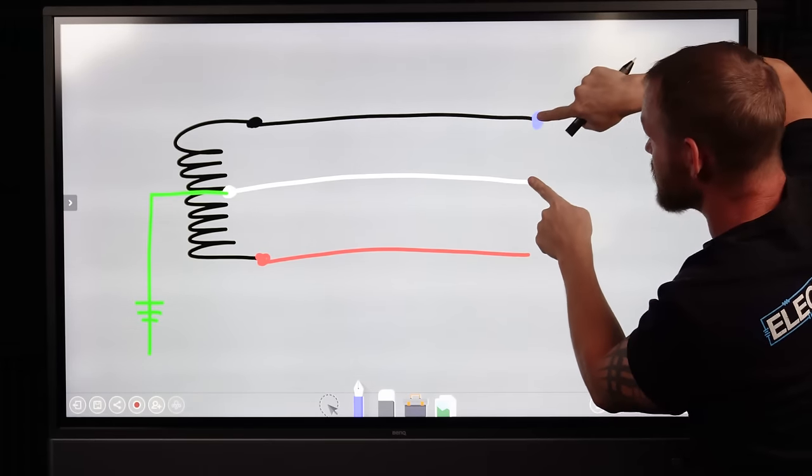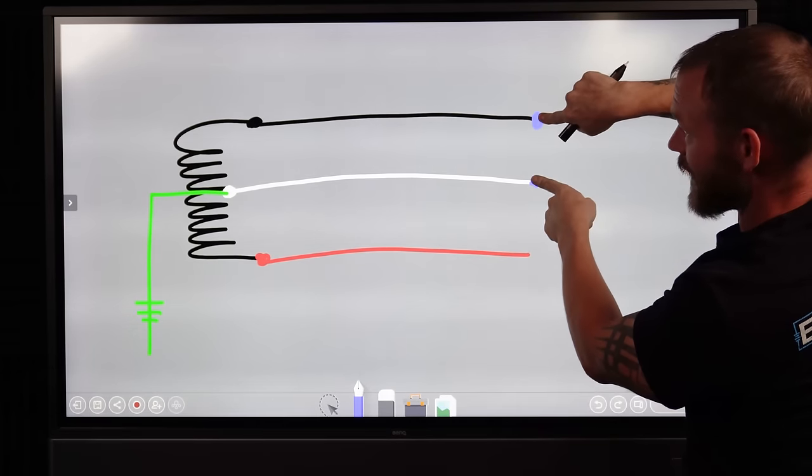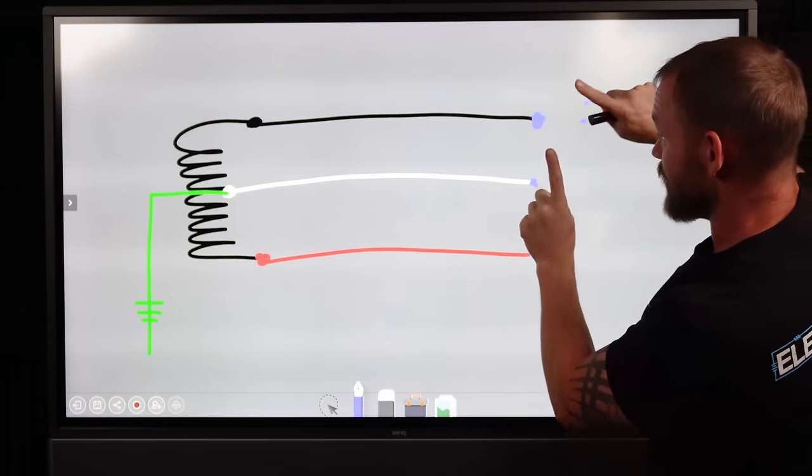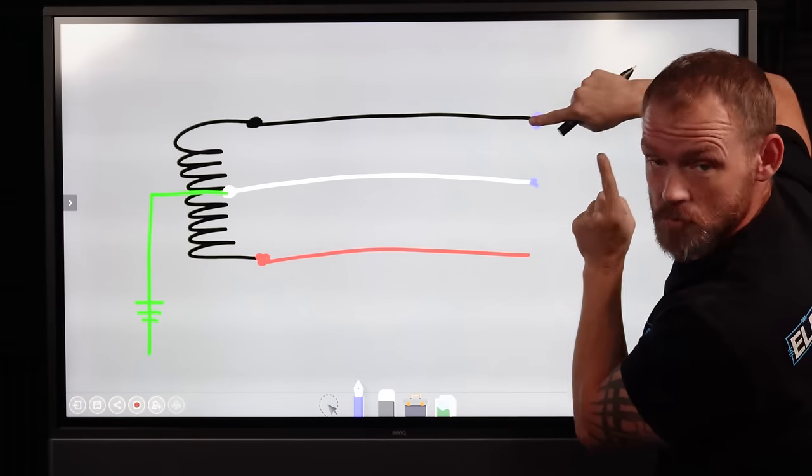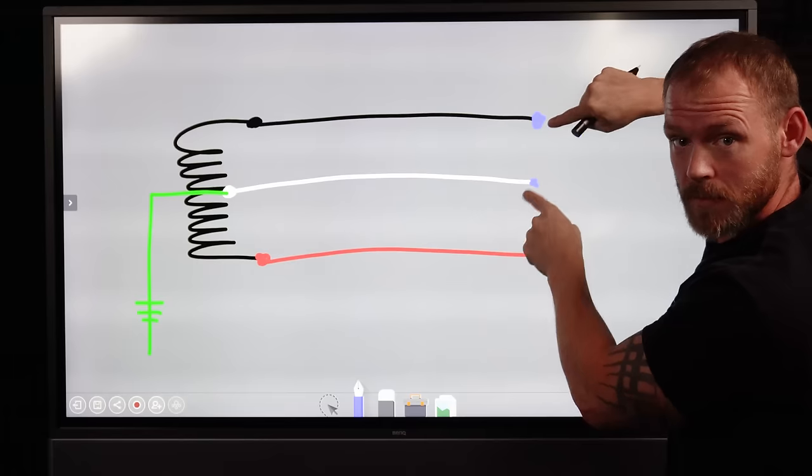But if I were to touch both of these points, now through my body there's a path, there's a complete loop. So it is between two different things, between a neutral and a hot, that I'm allowing current to flow through me for a completed circuit to happen.